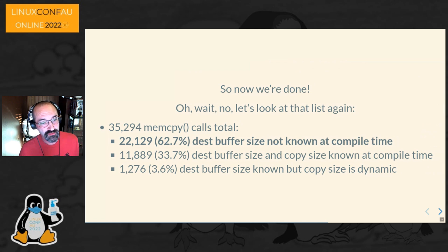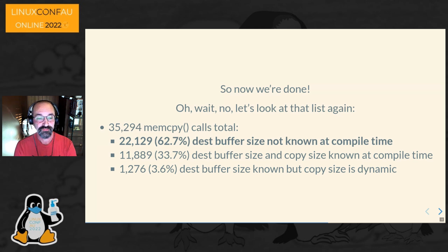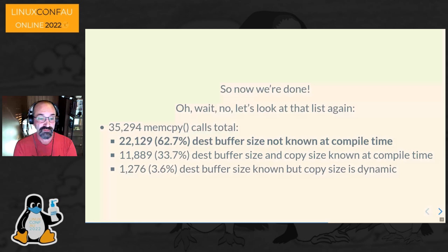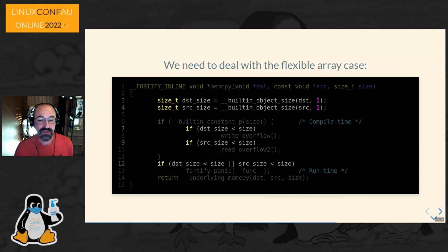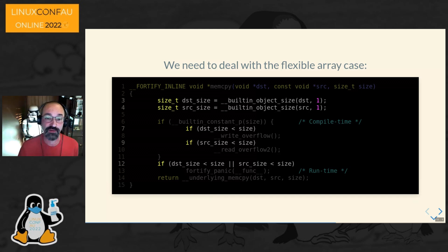So now we're done. Oh wait, let's go back and look at that list again. While we've handled that tiny 3% case — which did cover all the CVEs in the past three years — we realistically can't ignore the fact that more than half of these memcopy uses are against destination buffer sizes that aren't known to the compiler. They're entirely dynamic. To seriously deal with buffer overflows, we need to address this as well. That's a big part of the flexible array case — in those cases, built-in object size returns minus one and says 'I don't know how big this is,' so these cases fall straight through to the underlying memcopy.